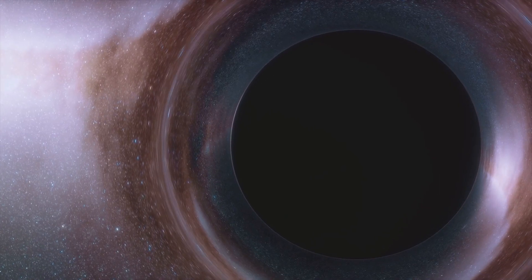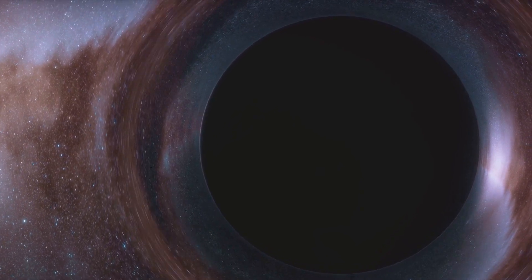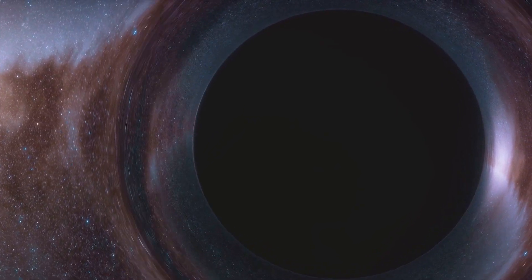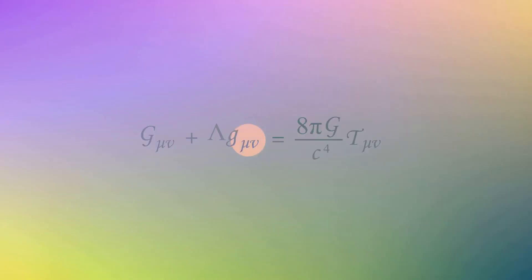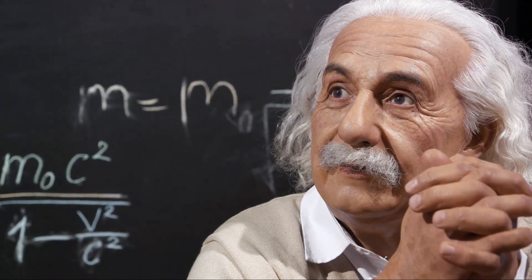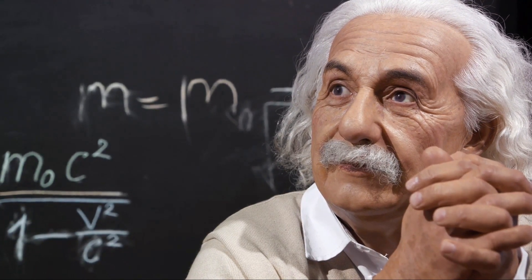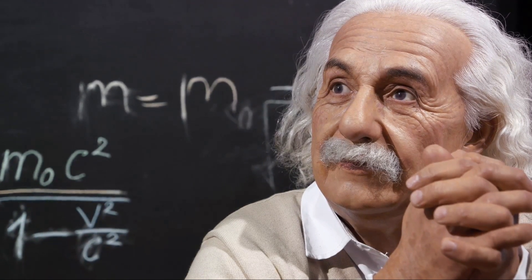These observations provide concrete evidence of the existence of Sagittarius A. Current estimates suggest it has a mass equivalent to about 4 million suns, all packed into a region no larger than our solar system. But the dance of the stars around Sagittarius A asterisk is not just a spectacle. It's also a laboratory. It allows us to test the predictions of Einstein's theory of general relativity in extreme conditions, where the gravitational field is incredibly strong. So far, the theory has passed with flying colors, further solidifying its place as our best description of gravity.